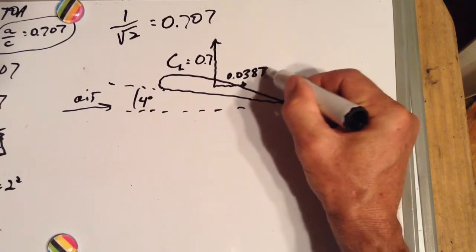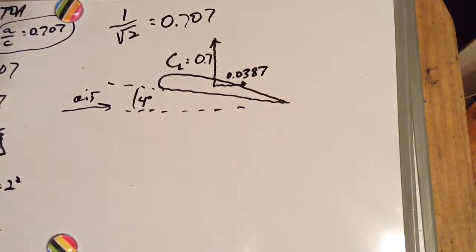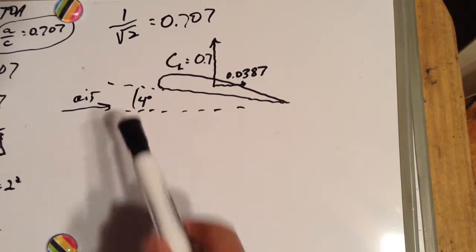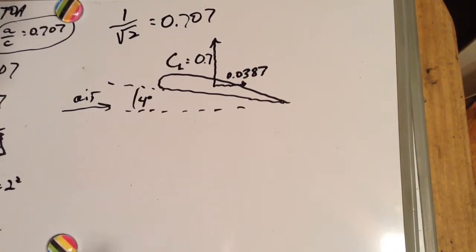You're wondering where I got these numbers from. That came off a Clark Y chart that we have. Actually, that was for 4.1 degrees but we're just talking theoretically here.